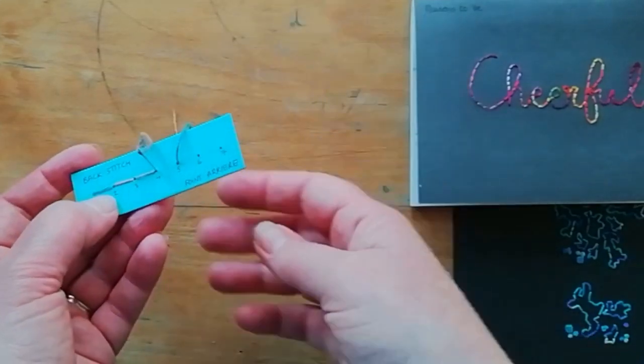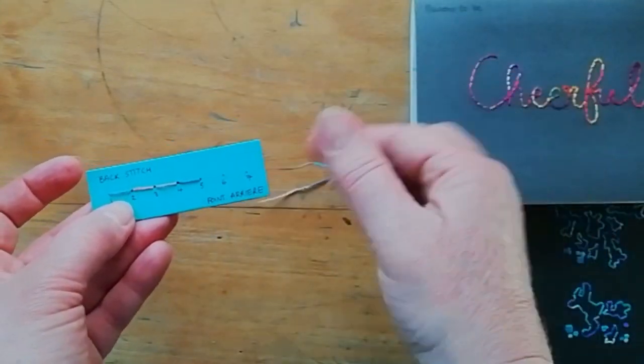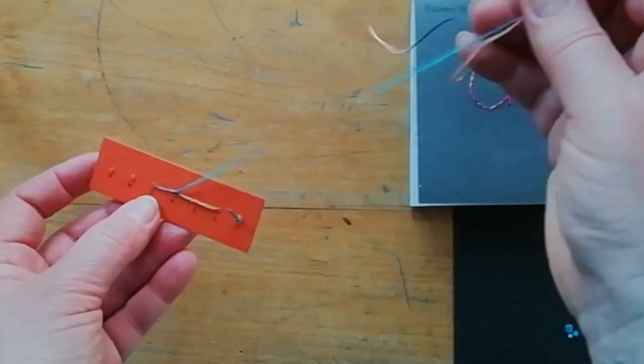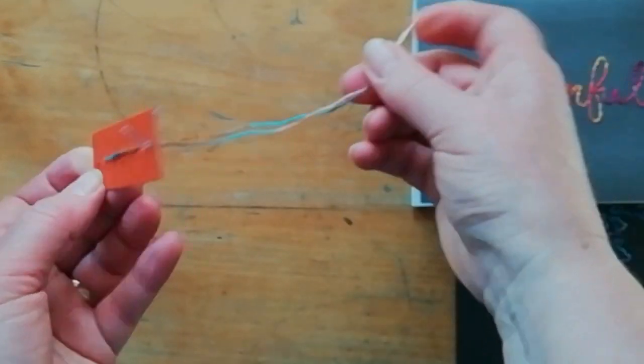So each stitch on the good side of the card, I'm going backwards, which is obviously where the name comes from. And each stitch on the back, I miss one hole and go on to the next number.